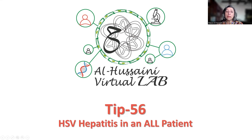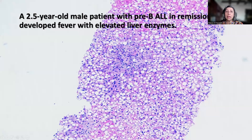This is herpes simplex virus hepatitis in immunocompromised individuals — in this instance, a patient with ALL. This is a two-and-a-half-year-old male patient who was diagnosed with pre-B ALL; however, he was in remission. He presented to the hospital with fever and elevated liver enzymes.